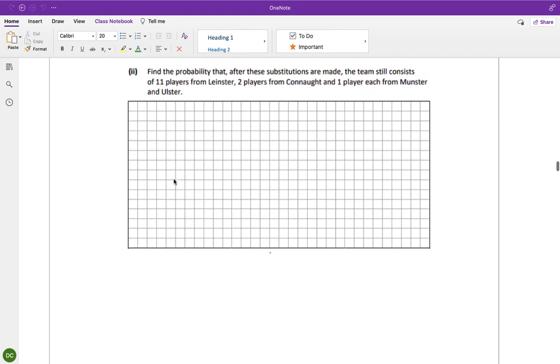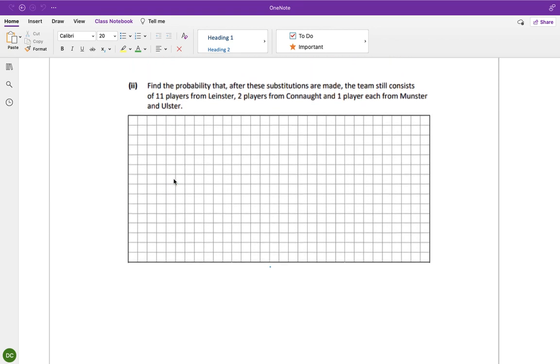So find the probability that after these substitutions are made, the team still consists of 11 players from Leinster, two players from Connacht, and one player from each of Munster or Leinster. So that essentially means that in order to put a Leinster player on, we're going to take a Leinster player off. To put a Connacht player on, we're going to take a Connacht player off.